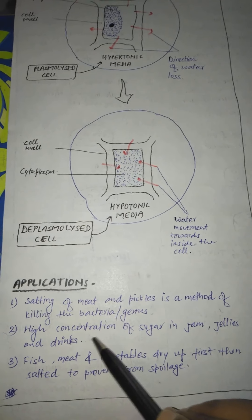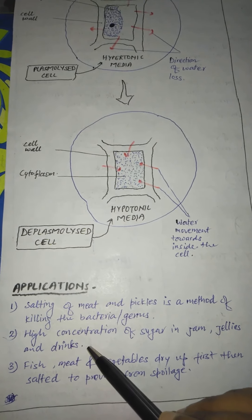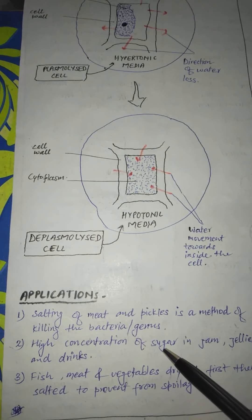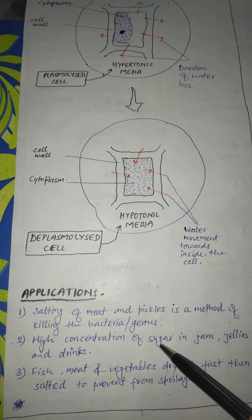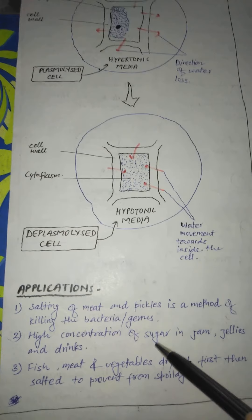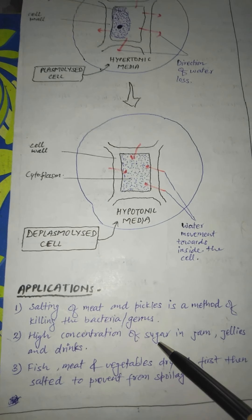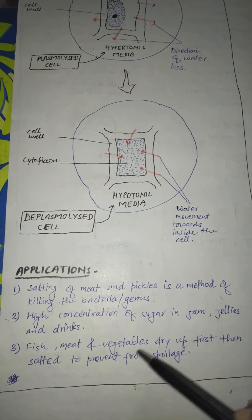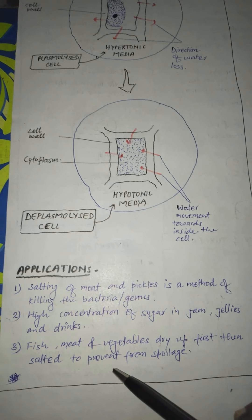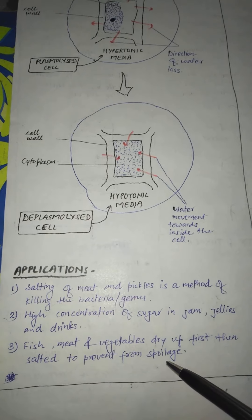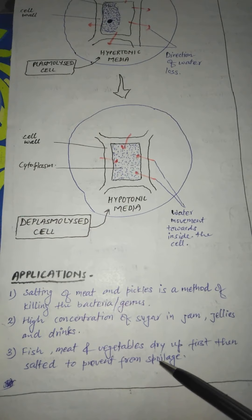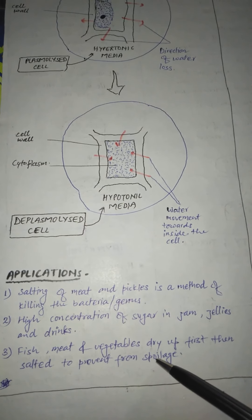The next application is the high concentration of sugar in jam, jelly, or different kinds of drinks — due to the high concentration of sugar, bacteria or germs present in those materials die due to water loss or dehydration. Another application is that fish, meat, and vegetables are dried and salted to prevent spoilage, which follows the same plasmolysis phenomenon discussed above.